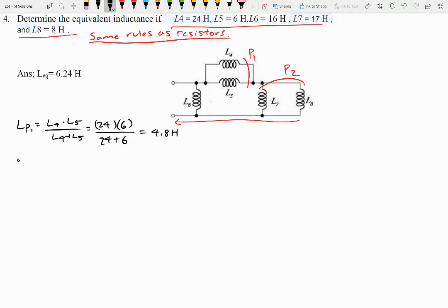So if we go and redraw that. L4 times L6, this would be L parallel one, L7, and L8. And you don't have to worry about commenting about how great my inductors look. I already know.